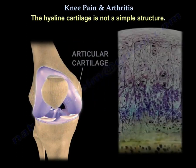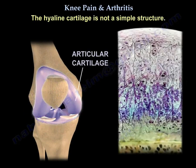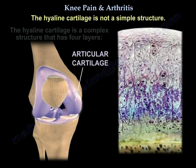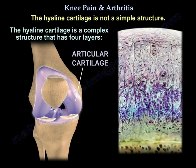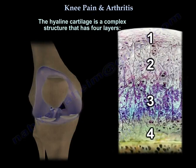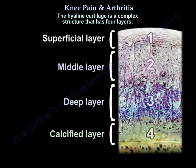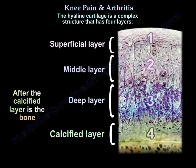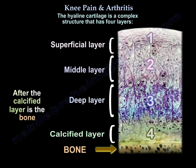The hyaline cartilage is not a simple structure. It is a complex structure that has four layers: a superficial layer, a middle layer, a deep layer, and a calcified layer. After the calcified layer is the bone.